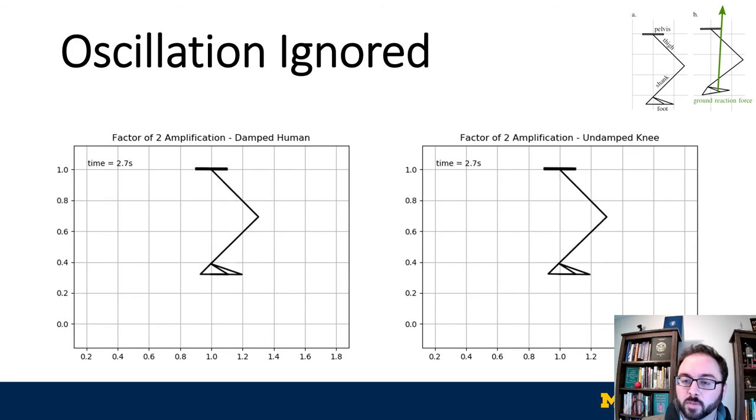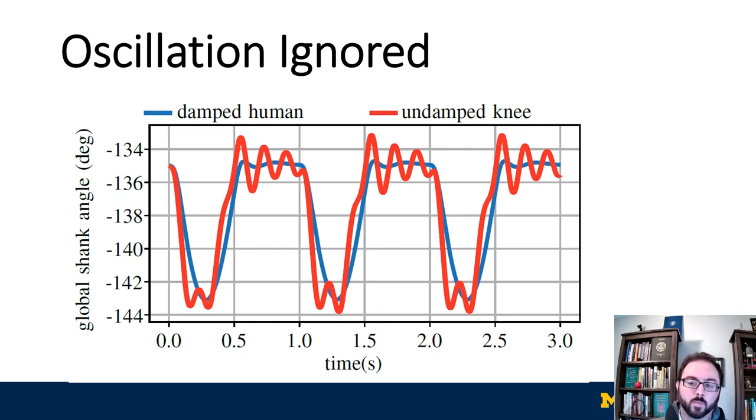This new version, shown on the right, clearly shakes for longer and with higher amplitude than before. Plotting the global shank angle as a function of time, we compare the original damped human simulation in blue with the new undamped knee simulation in red. The oscillation is clear.